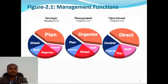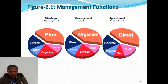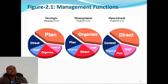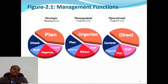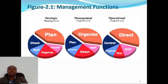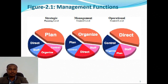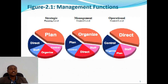Looking at the figure, there are five major functions of management: planning, directing, staffing, organizing, and controlling. However, these activities vary depending on the level of management. For example, the strategic level of management is mainly focused on planning, while the middle level focuses on organizing. The operational or lowest level of management is in many cases focused on directing.